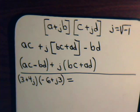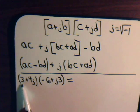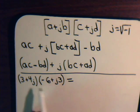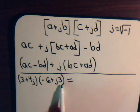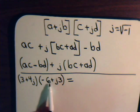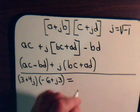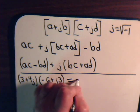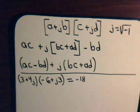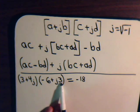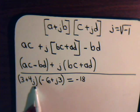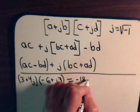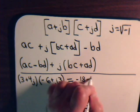The real component comes from multiplying the outer terms and the last terms. So minus 6 times 3 is minus 18. Then 4 times 3 is 12, but j squared is minus 1, so that makes it minus 12.